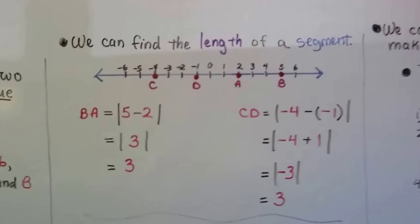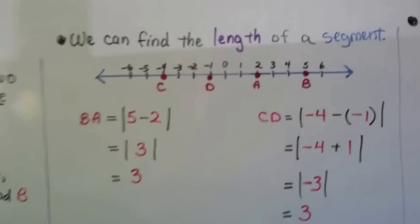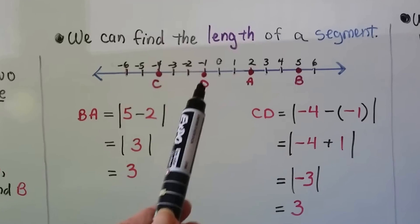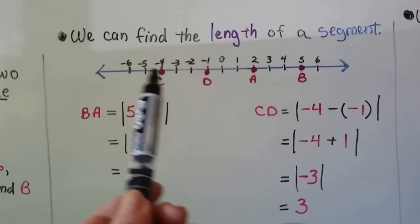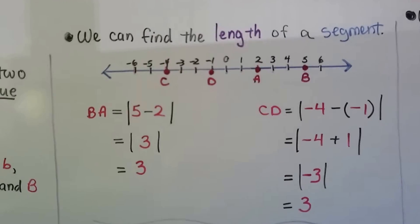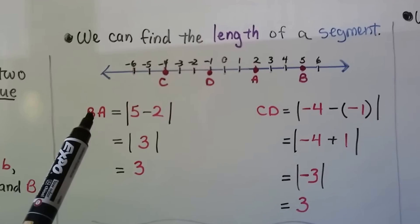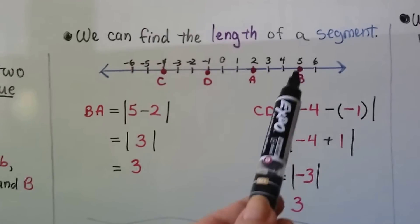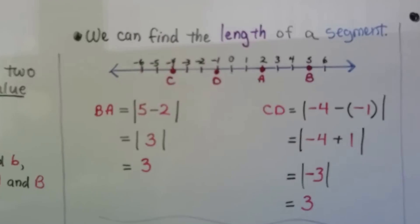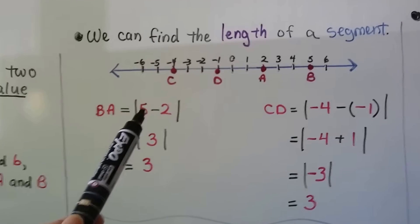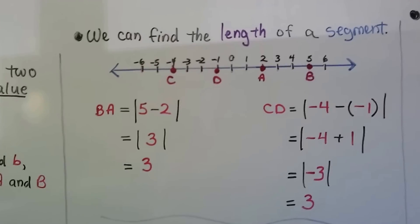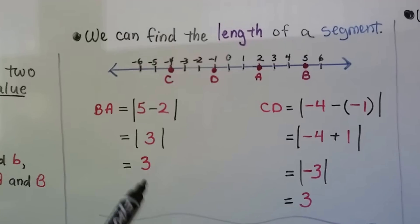And we can find the length of a segment. So here we've got C, D, A, and B, and we can see they're numbered like on a number line. BA is equal to 5 minus 2. It's the absolute value of 5 minus 2, which is the absolute value of 3, which is 3.